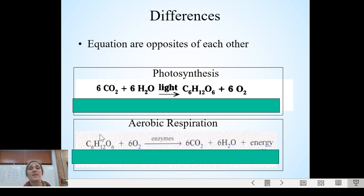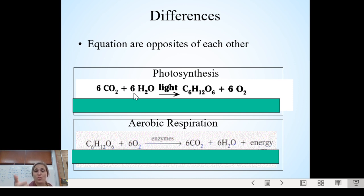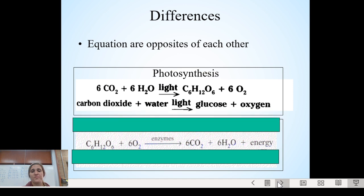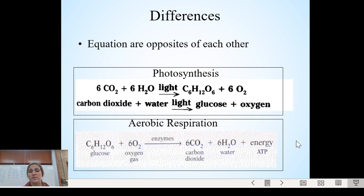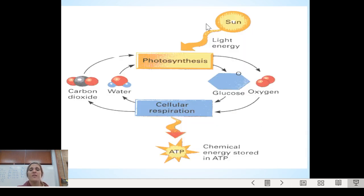Cellular respiration is the opposite — you take glucose, cut it up, and use oxygen with enzymes. What you get out is carbon dioxide, water, and energy. These are complements to each other: the products of photosynthesis are the reactants of cellular respiration, and the products of cellular respiration are the reactants of photosynthesis. It's a cycle — plants make sugar and oxygen that we take in, and we use those to make carbon dioxide and water, and it just cycles through. It might be a good idea to pause and find a cellular respiration–photosynthesis cycle picture right now.